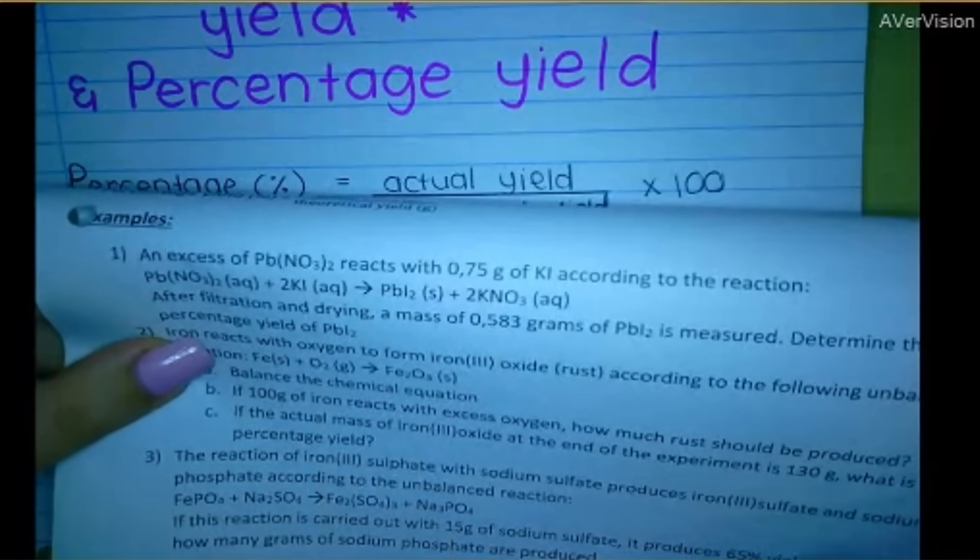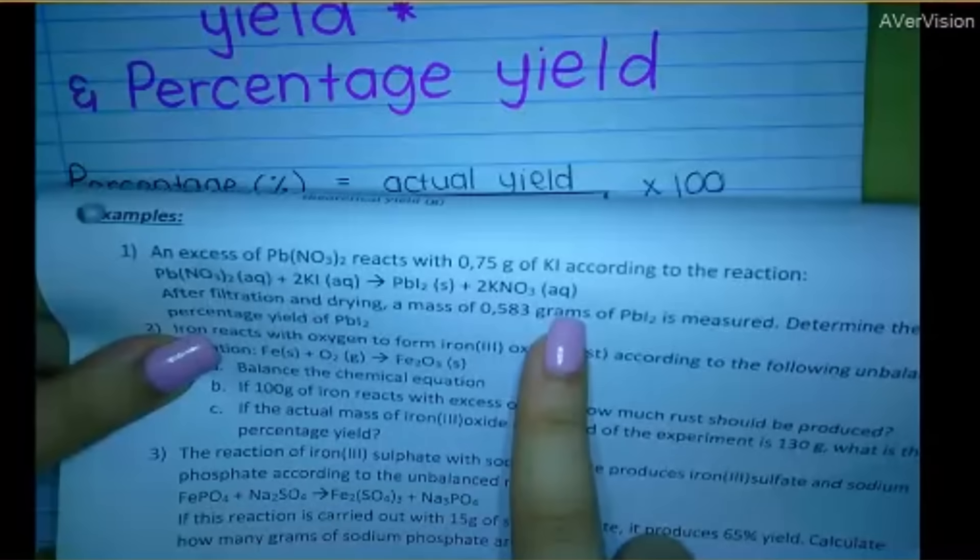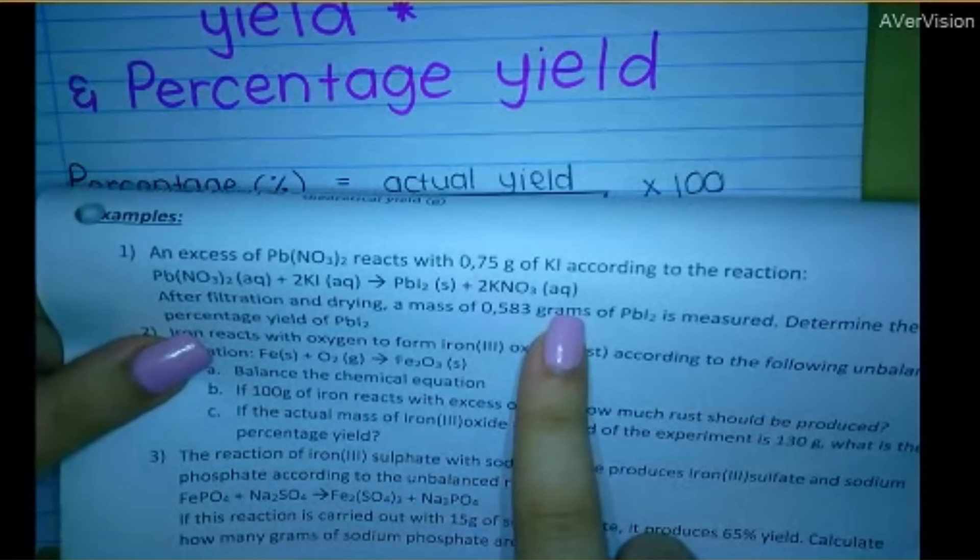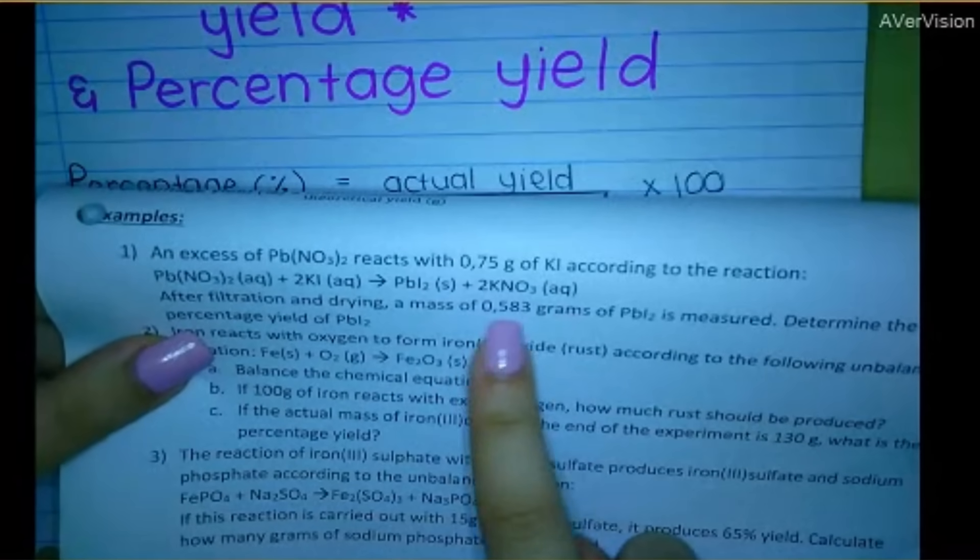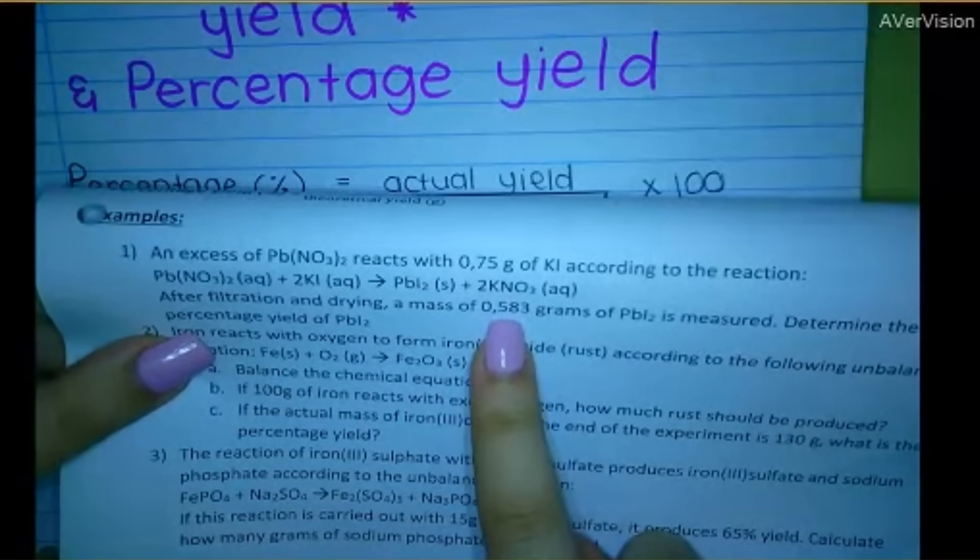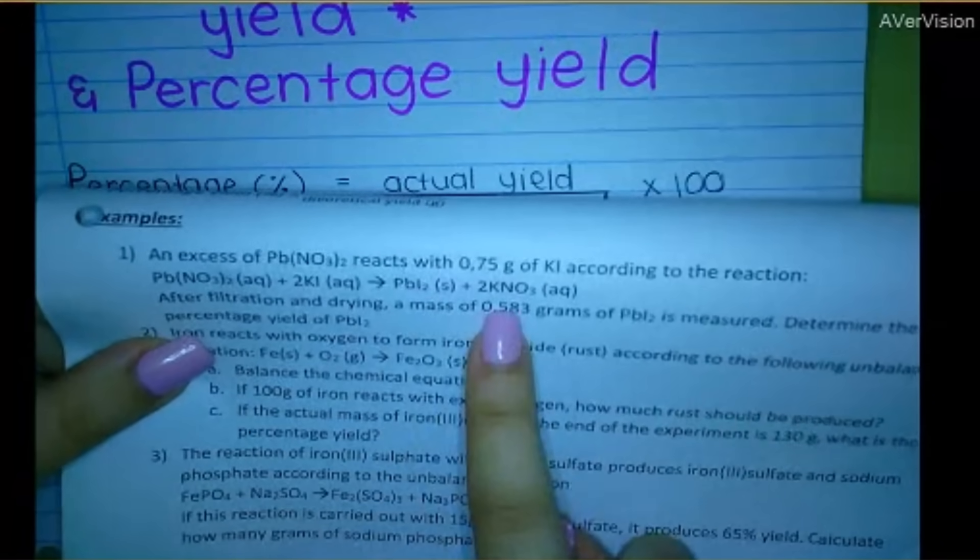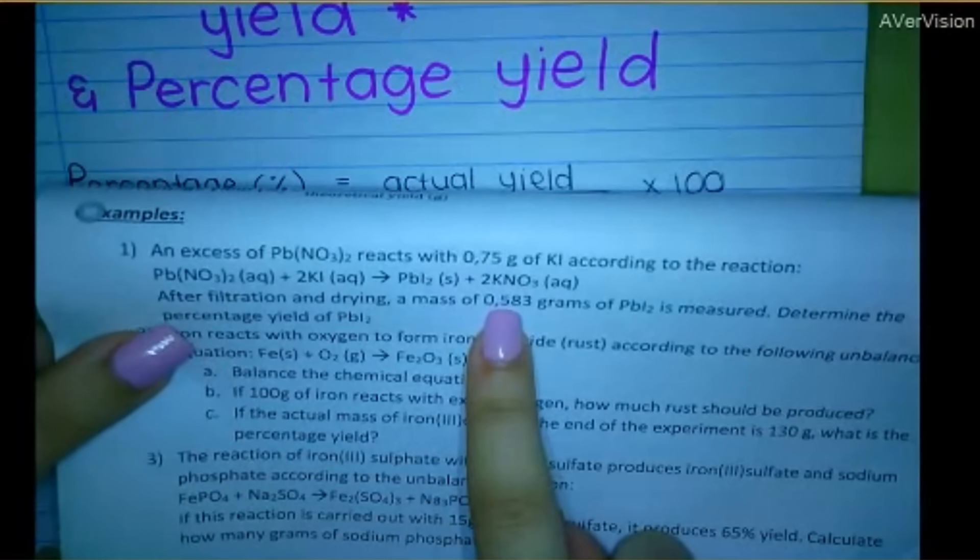Okay, so basically what they're giving you is the actual yield. So they're saying after we complete the experiment, they filter and dry it. And this is what we actually got. So some dude in the lab, he went ahead and did the reaction. Then he dried and filtered that stuff. And he weighed it on the scale.